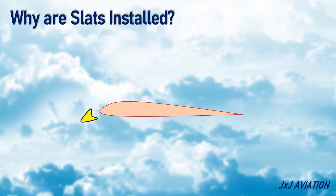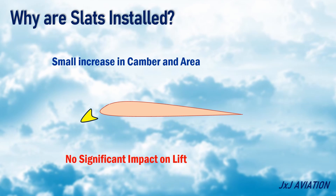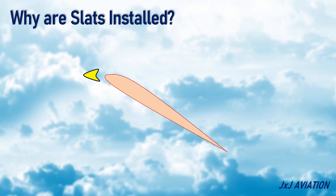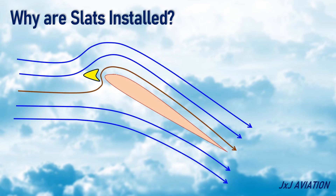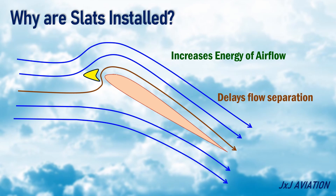When the slats are extended, there is a small increase in the wing area and the camber. This does not have a significant impact on the lift. When the angle of attack is increased, the high-pressure air under the wing flows through the gap between the slats and the wing. This increases the energy of the airflow over the top surface, which delays flow separation. This means, with the slats extended, the critical angle of attack is increased, so the aircraft can fly at a greater angle of attack.